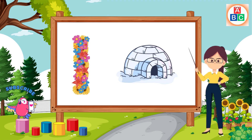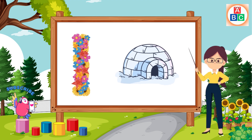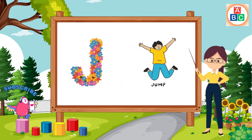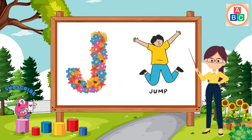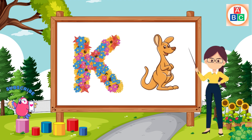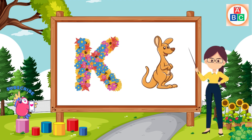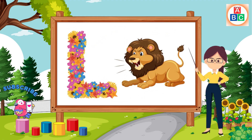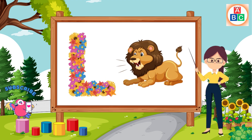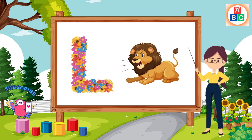I is for igloo, i-i-igloo. J is for jump, j-j-jump. K is for kangaroo, k-k-kangaroo. L is for lion, l-l-lion.